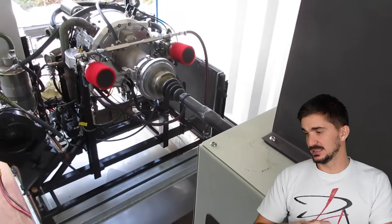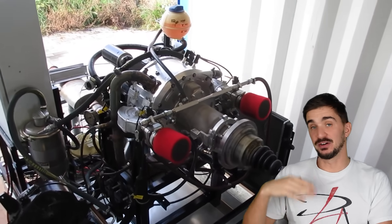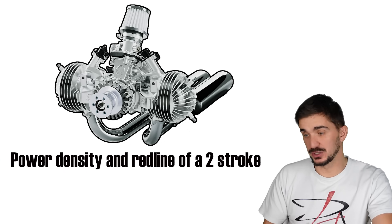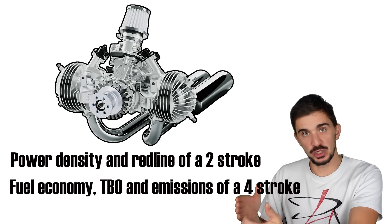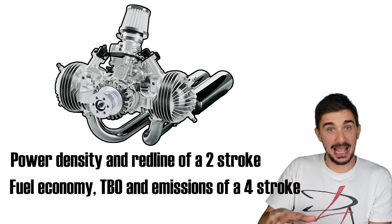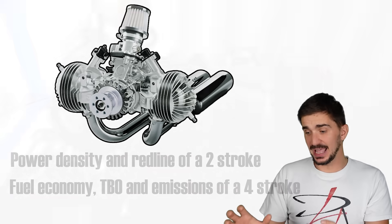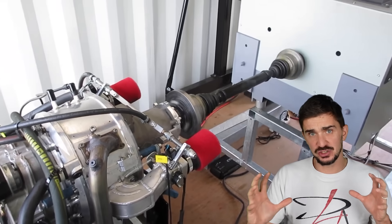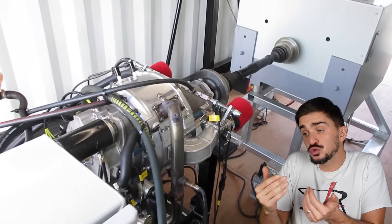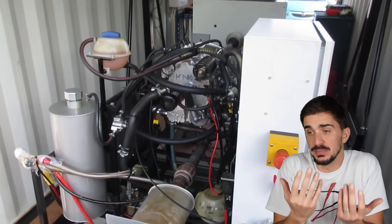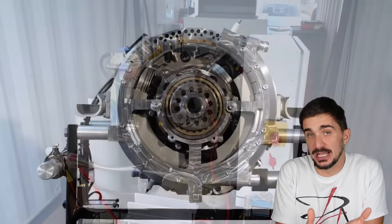Overall, the increased power density, the lack of cams and valves, and a very high red line remind me of a two-stroke. But the bi-rotary also offers fuel economy, emissions, and time between overhauls comparable to that of a four-stroke. If this is true, this engine offers a very interesting combination of benefits that should make it an extremely attractive choice in its target market, which in my opinion means that it has a good chance of success.